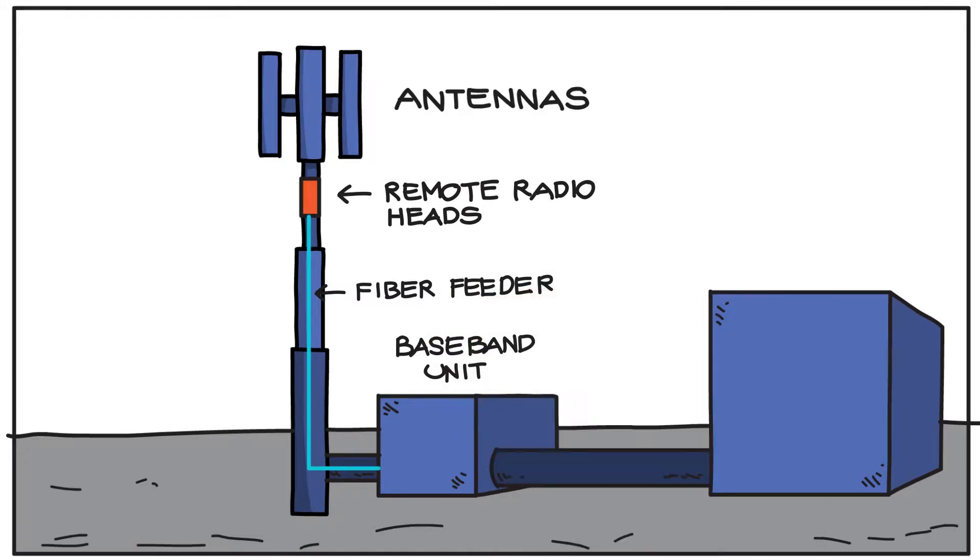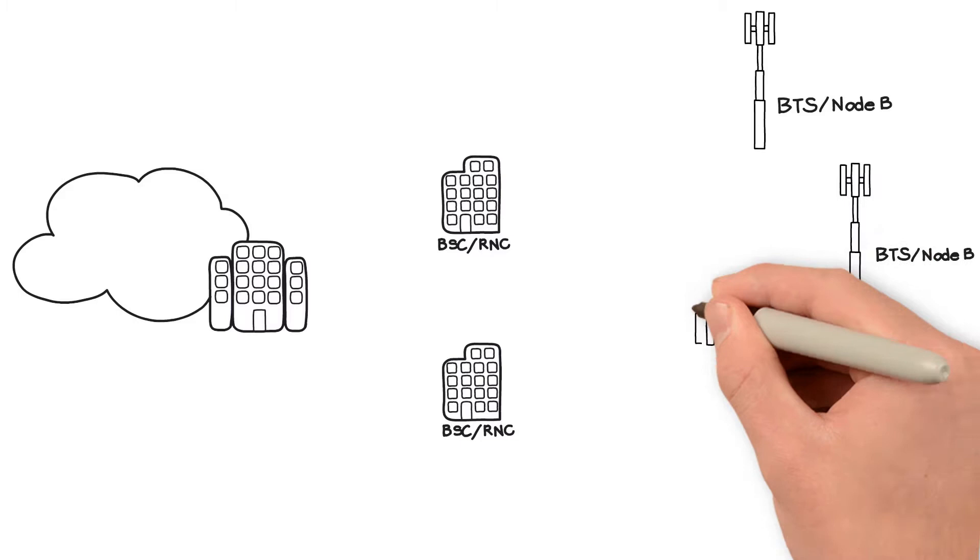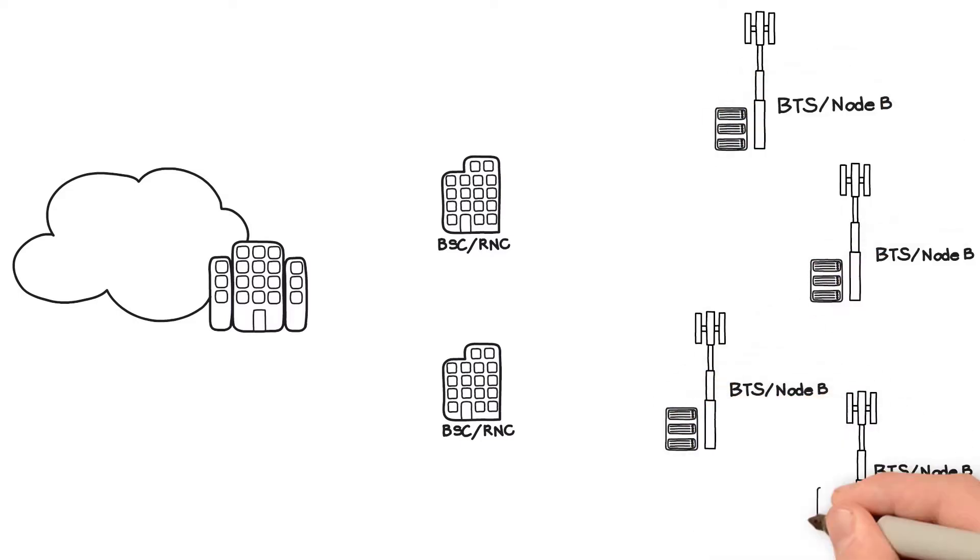Baseband unit. The BBU processes all the data sent and received by the base station. In D-RAN, every tower has its own dedicated BBU, which is connected to its RRH through an optical fiber.